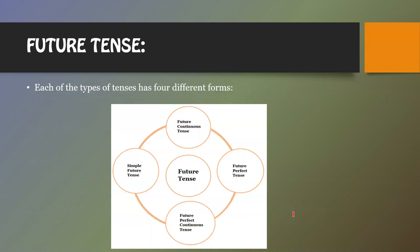Future tense has four types: simple future tense, future continuous tense, future perfect tense, and future perfect continuous tense.